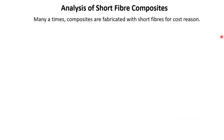Analysis for short fiber composites. Many times composites are fabricated with short fibers for cost reasons. Long fiber composites tend to be very expensive and therefore can only be used for specialized applications like aircraft or very expensive cars. To solve this problem, composites are fabricated with short fibers because using short fibers you can use manufacturing methods like injection molding and therefore produce products at a cheaper price.